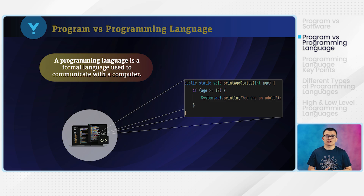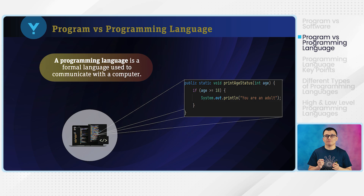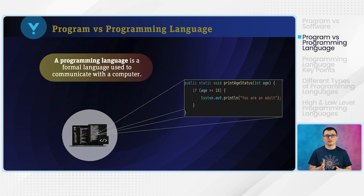Without a programming language, you would have to use binary codes in order to communicate with the computer, because the only language that the computer understands is machine language. And machine language is written in binary codes, which is a lot more difficult to learn and difficult for us to read. That's why learning a programming language is important — you would rather learn a programming language, which is a formal language, than machine language, which looks like an alien language.